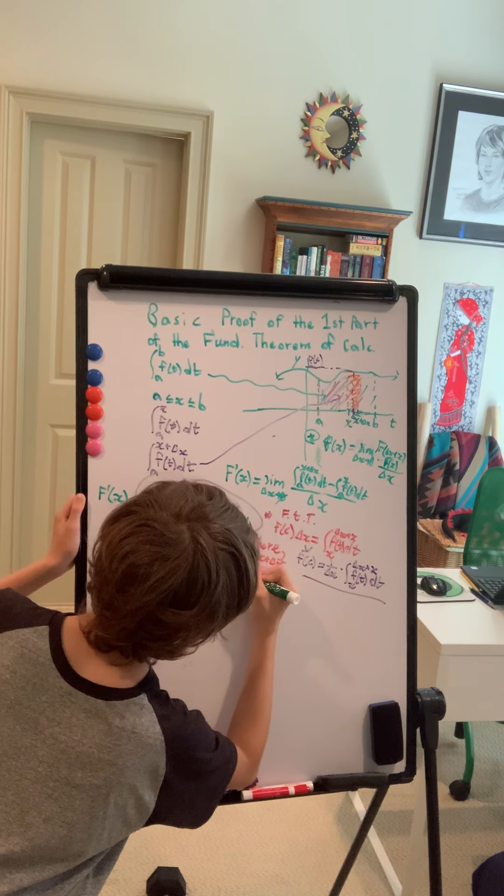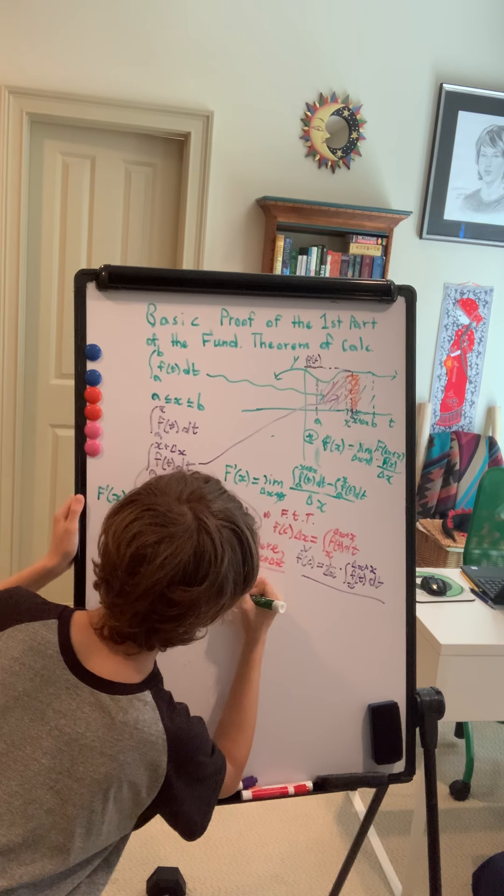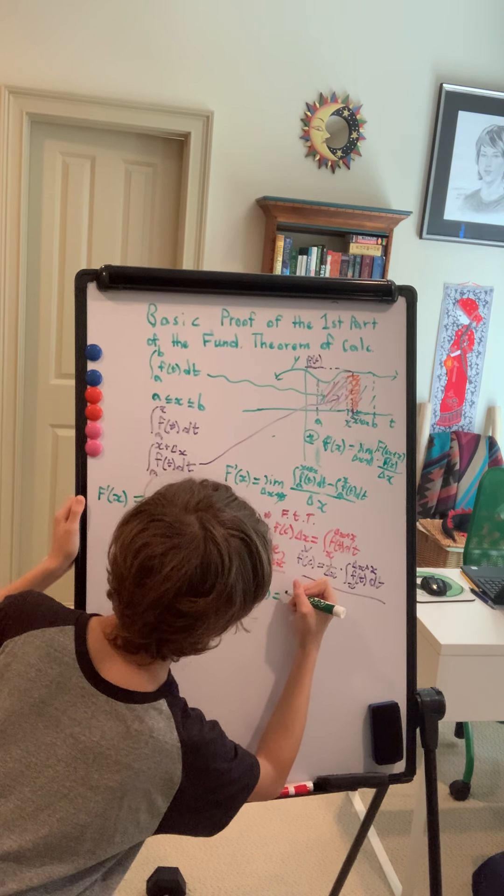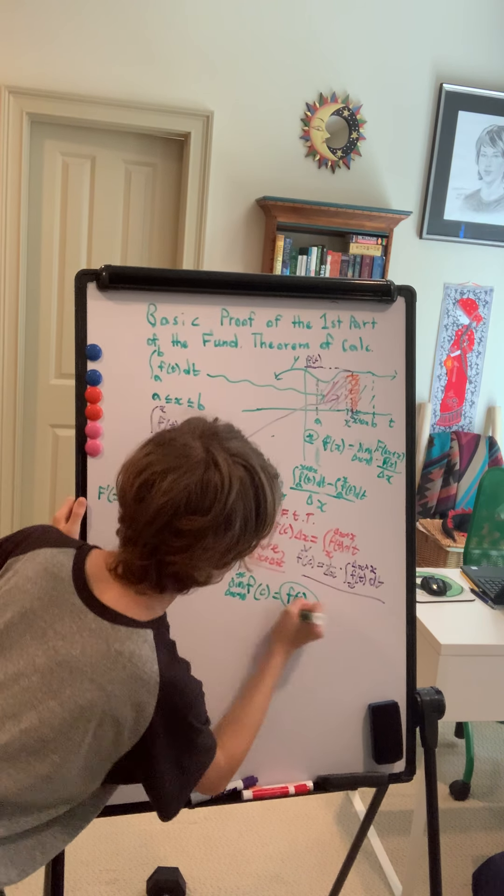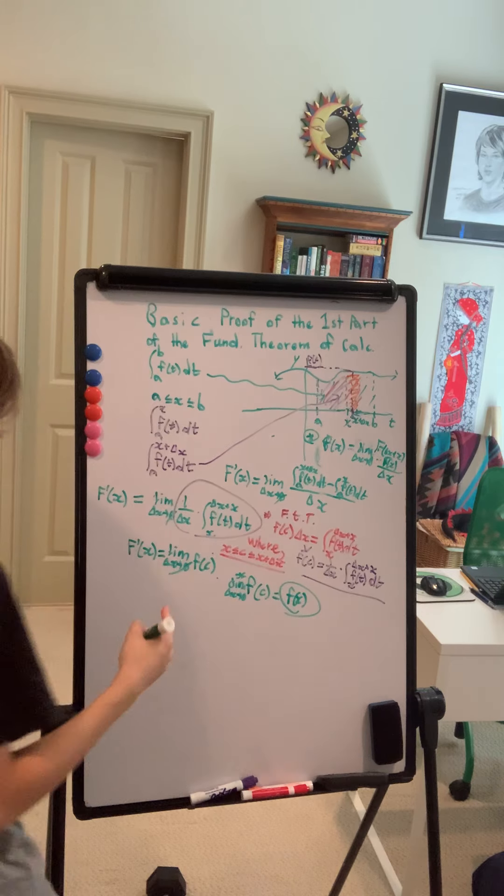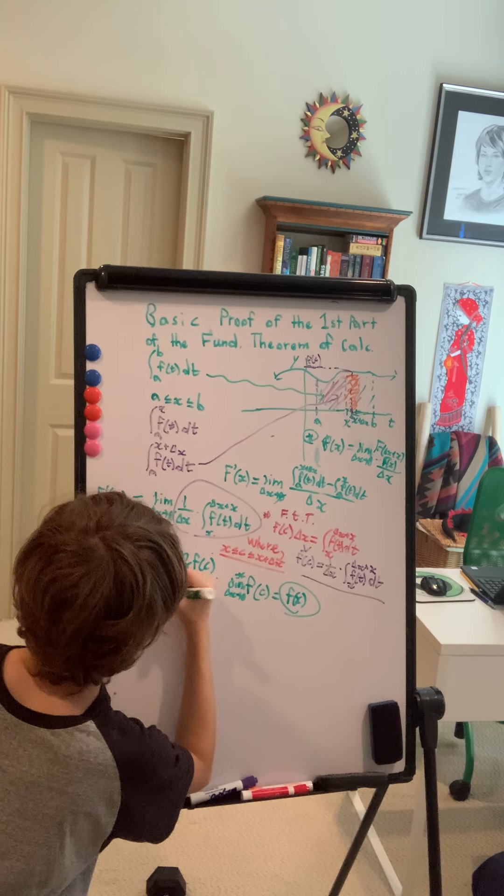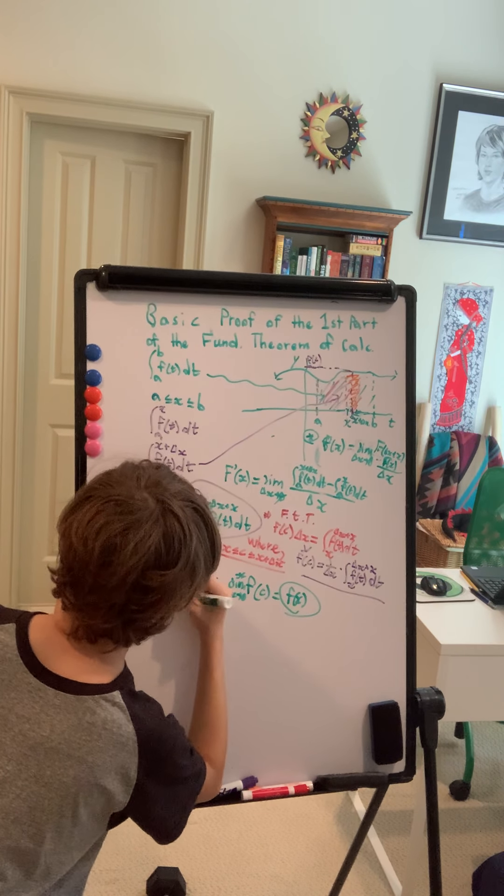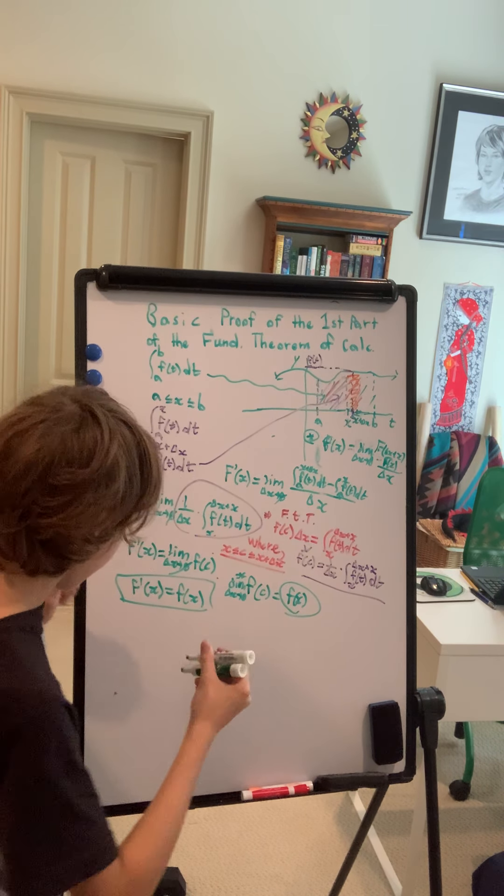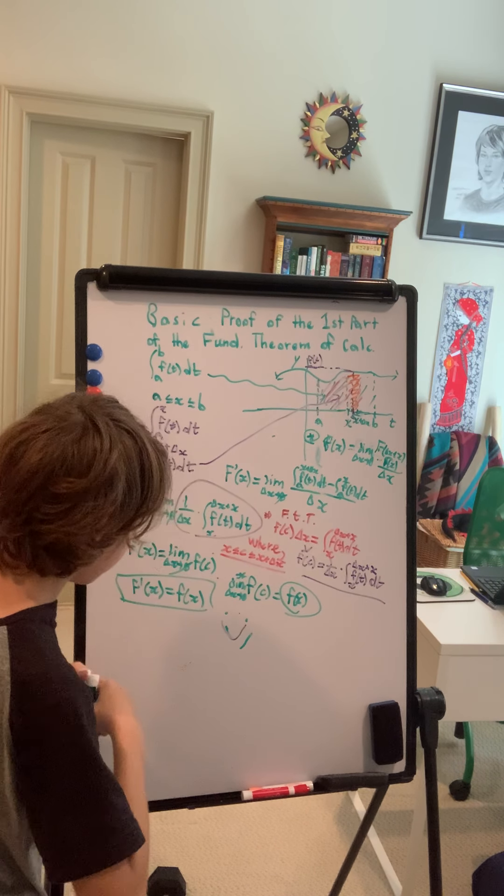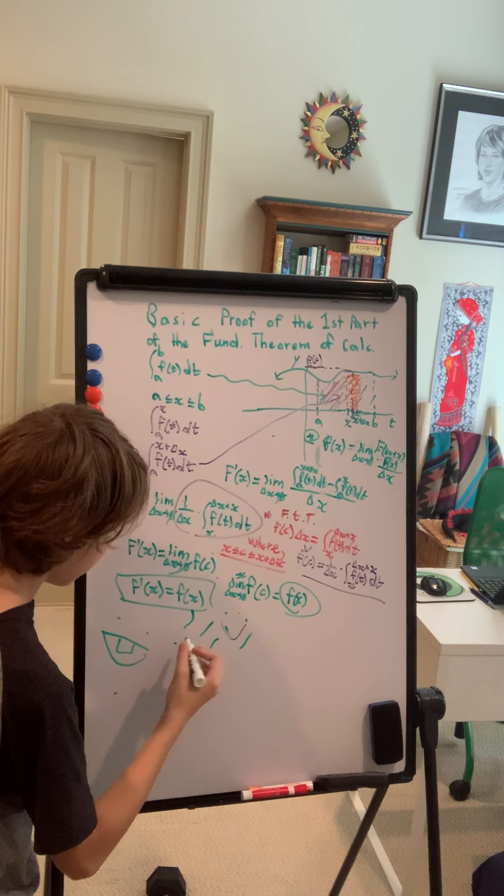And well, if you don't get it yet then we can just rewrite this. F prime of x, well, is equal to f of x. Wow. Happy face. Exclamation points. Larger happy face. Yay.